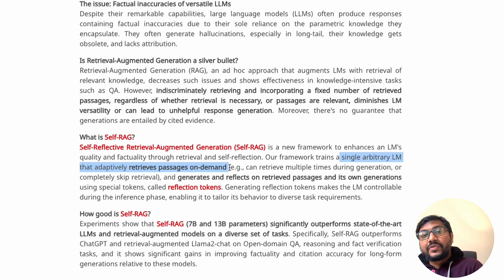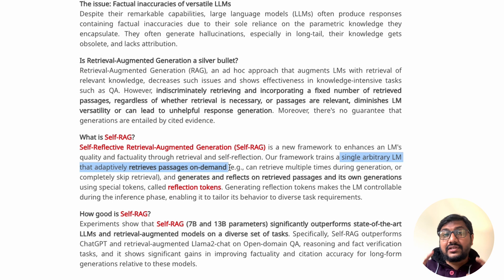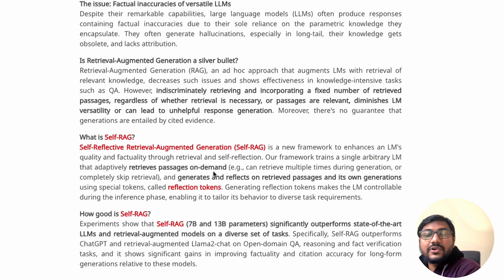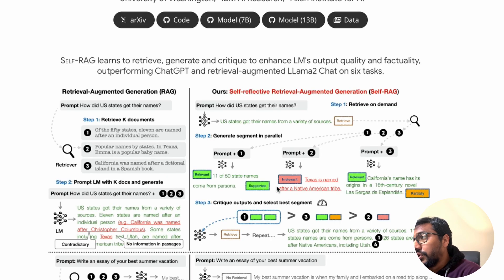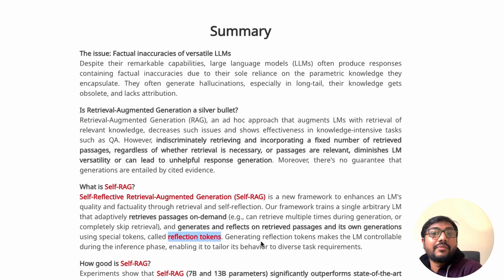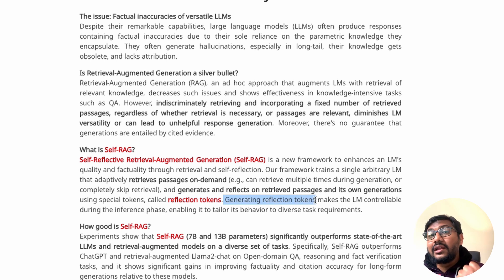For example, 'write a joke about Elon Musk' requires no retrieval, but 'what companies did Elon Musk start?' does require retrieval. The model retrieves on demand and sometimes skips retrieval entirely. It then generates and reflects on the retrieved passages and its own generations using a special token called a reflection token, which indicates the quality and relevance of the retrieval.